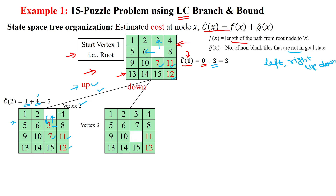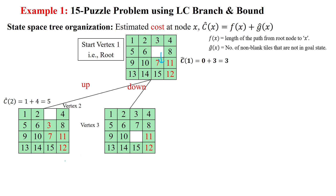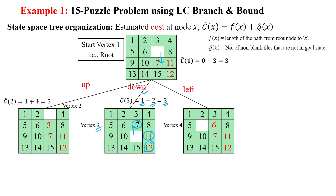Next, we try moving the empty slot downward. When it moves down, seven goes to the upper side. We calculate the cost of node three. The path length from the root is one branch. After this move, seven is correctly placed, so the misplaced tiles are only eleven and twelve — that is two. So the total cost is one plus two, which equals three.